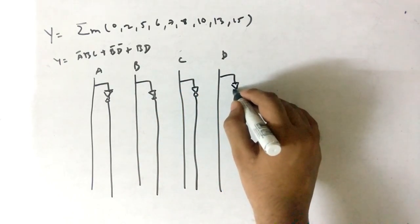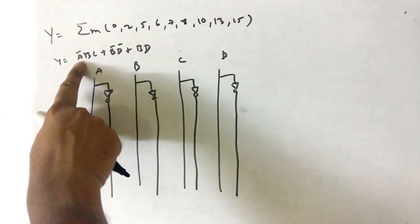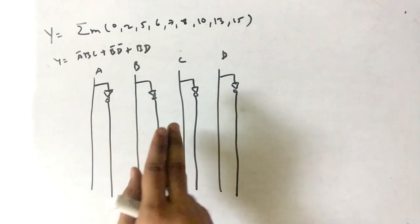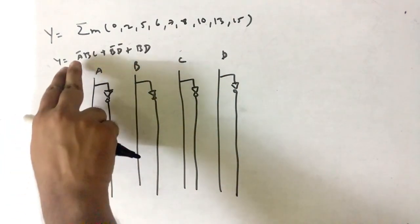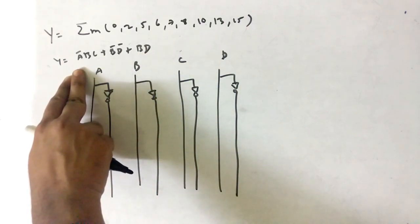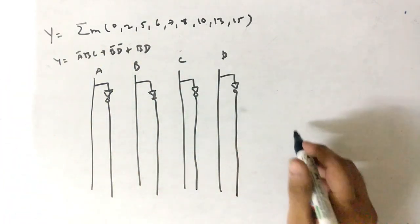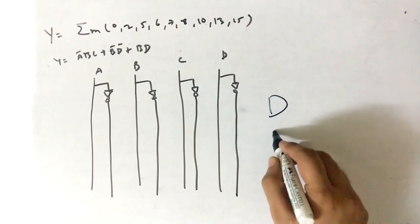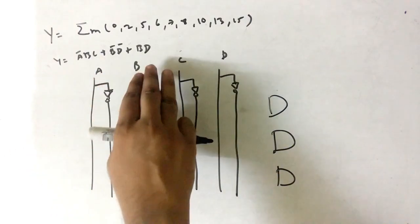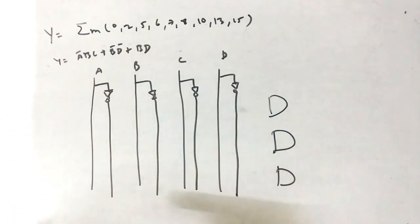First you have to see that in the equation we have, we will need one OR gate because we have to sum up all of that. Now if we talk about the individual terms, some variables are multiplied. When multiplication comes in the picture, you have to use the AND gate. We will require three AND gates because we have three terms where variables are multiplied.